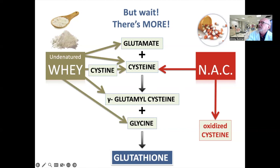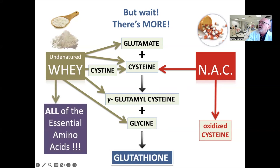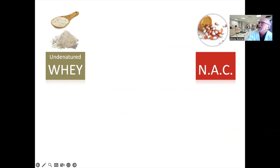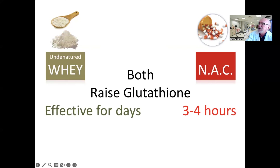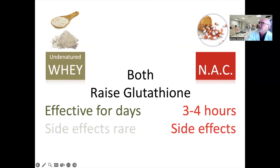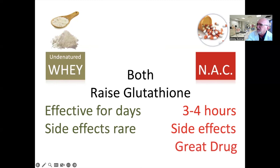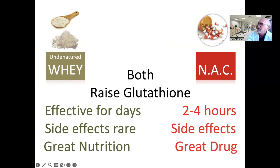The differences continue between these two. Whey contains all of the essential amino acids needed by humans — all of them. NAC provides none of them. To quickly summarize: both raise glutathione. NAC has a short half-life of about three to four hours; Immunocal is effective for days. NAC has side effects; side effects are rare for whey protein isolates like Immunocal. NAC is a great and effective drug used worldwide. Immunocal not only raises glutathione but is also a superior source of nutrition — in fact, it has the highest biological value of any known edible protein.